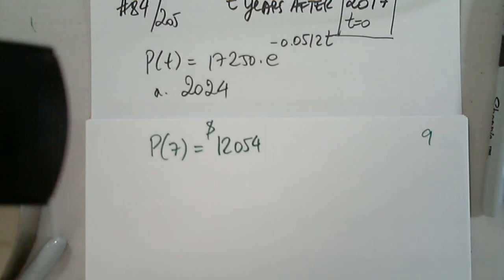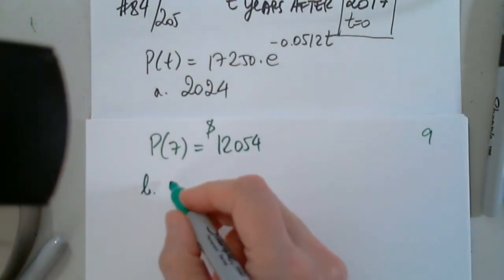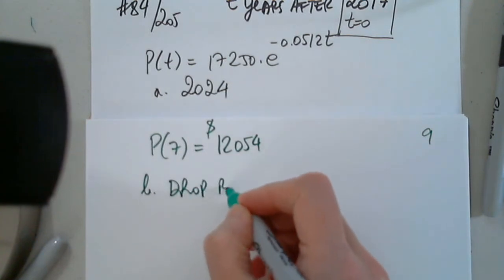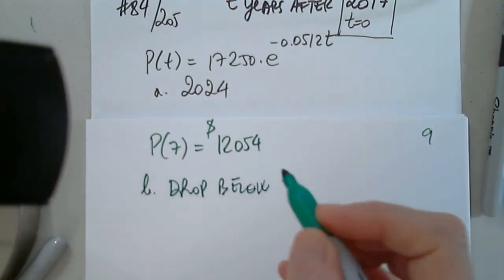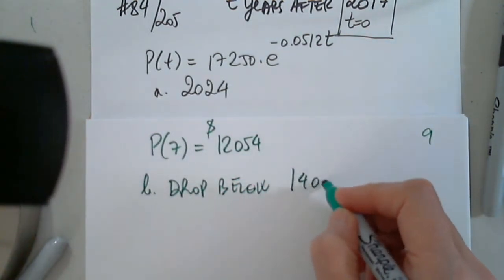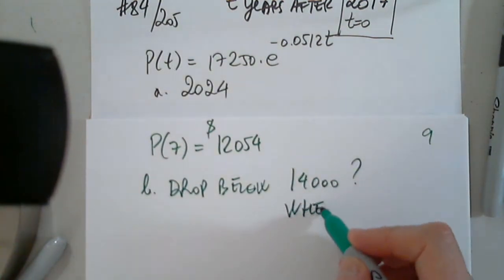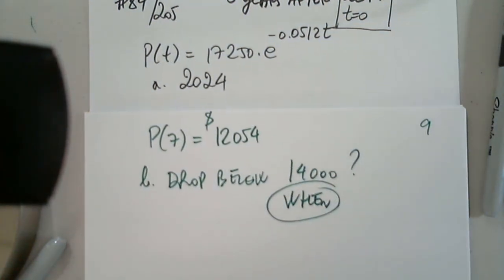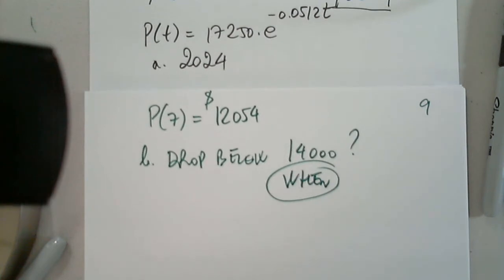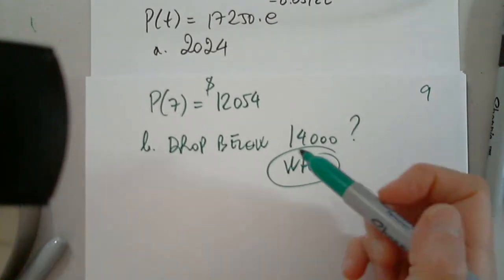When will the population first drop below 14,000? How do I address that? Set the equation equal to 14,000. Exactly.